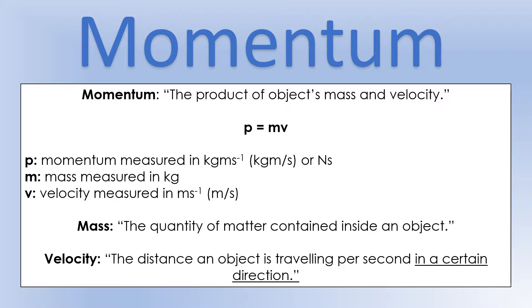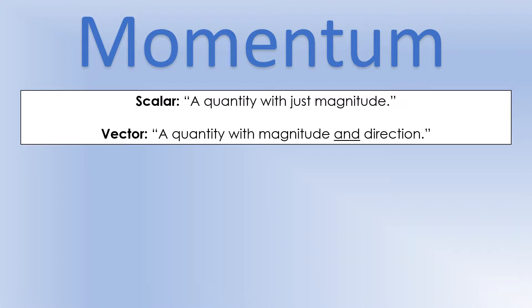Just to be complete — what do we mean by mass? We mean the quantity of matter contained inside an object. Velocity is the distance an object is traveling per second in a certain direction, so velocity has size and direction. Mass is a scalar quantity, meaning it just has magnitude, whereas velocity has magnitude and direction.